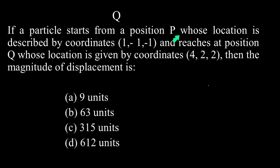If a particle starts from a position P whose location is described by coordinates (1, -1, -1) and reaches at position Q whose location is given by coordinates (4, 2, 2), then the magnitude of displacement. So the question is asking to find the displacement.